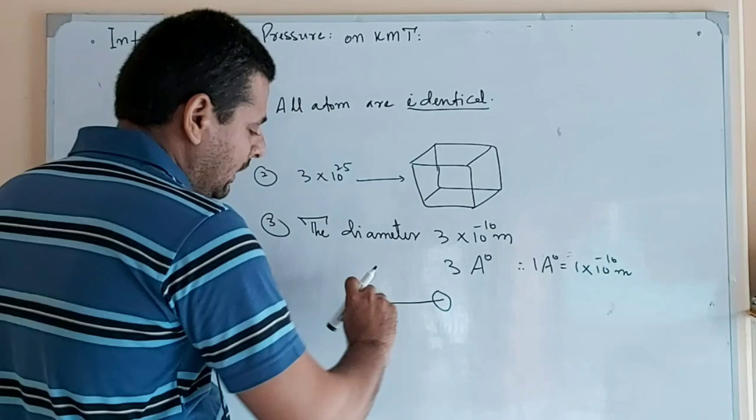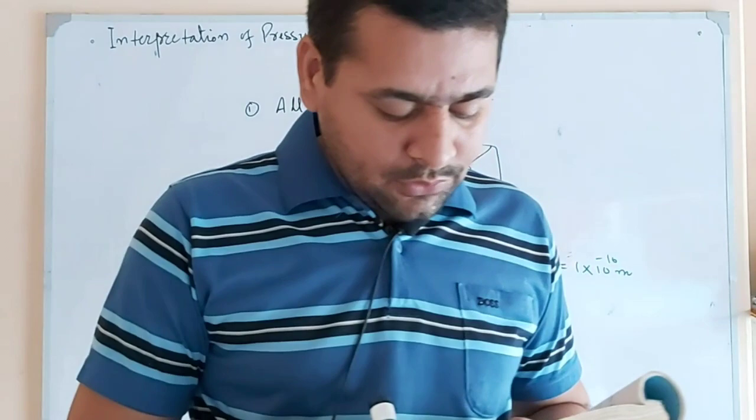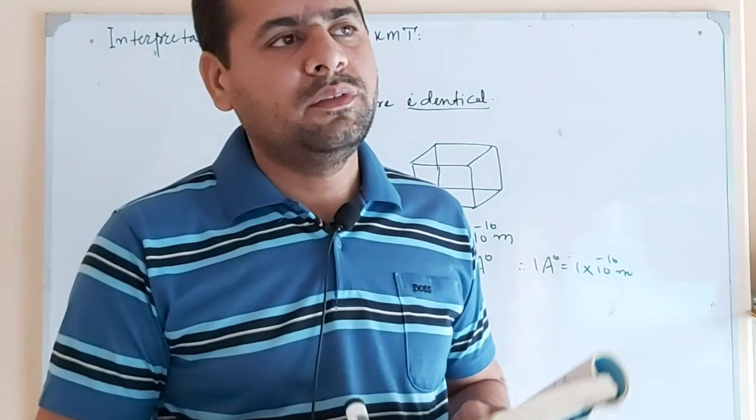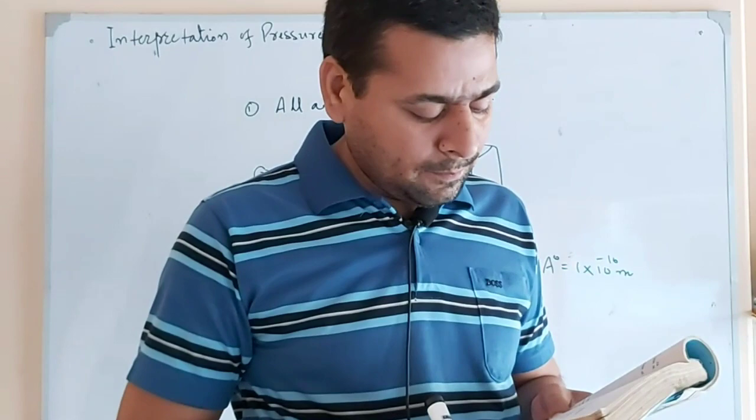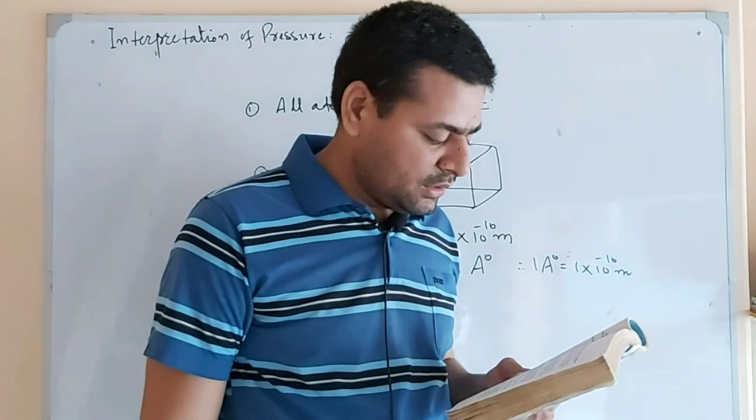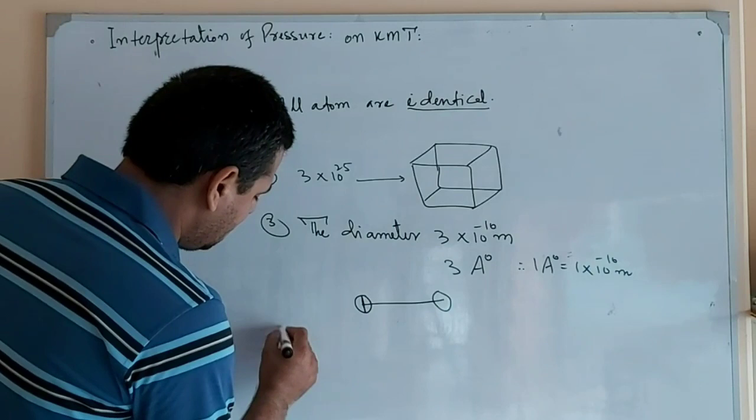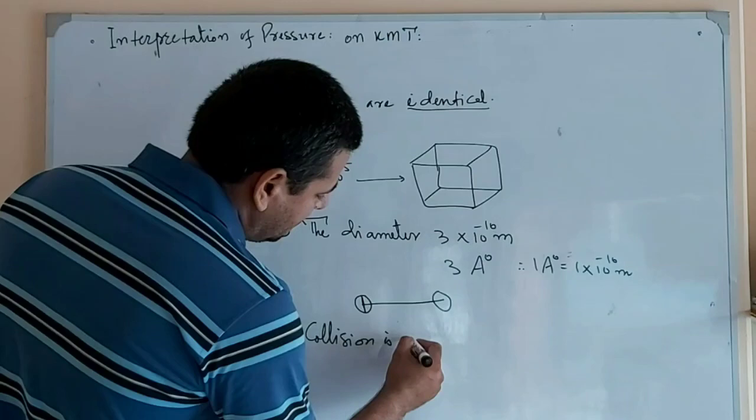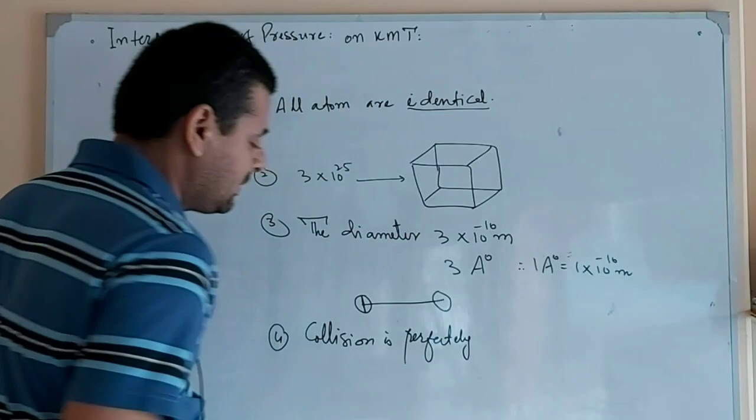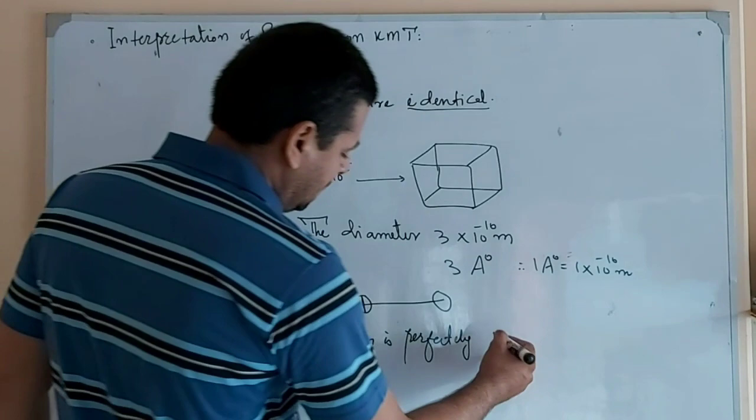Fourth postulate: the molecules move in all directions with various speeds, making elastic collisions with one another and with the walls of the container. The collisions are perfectly elastic. This is the fourth part of KMT - perfectly elastic collisions.